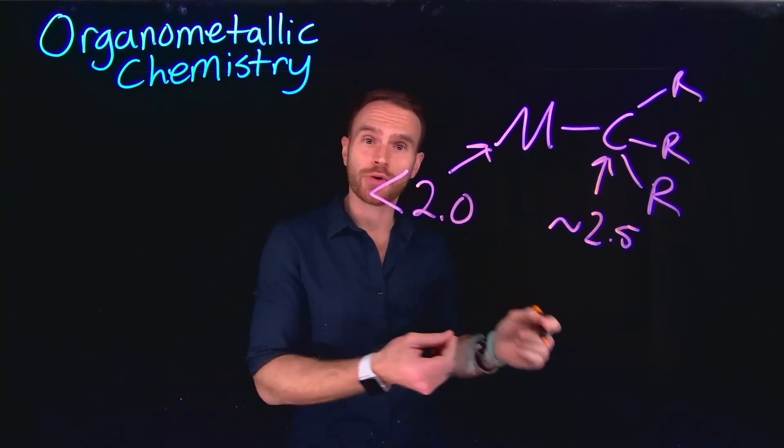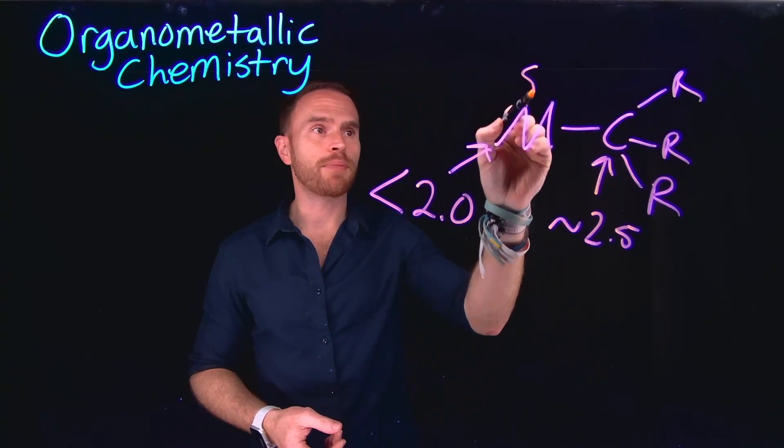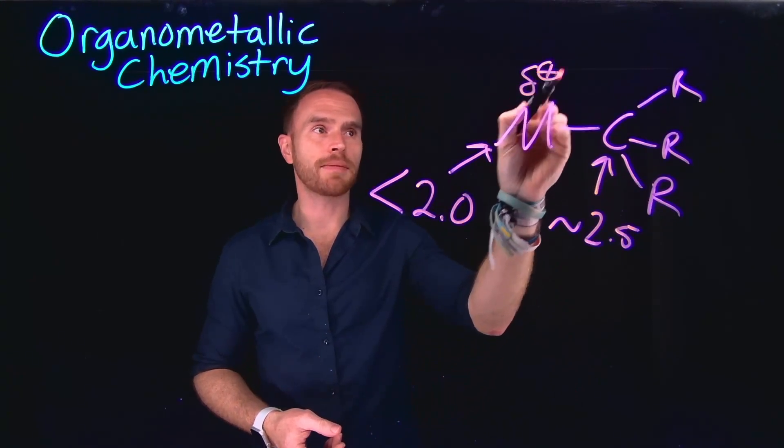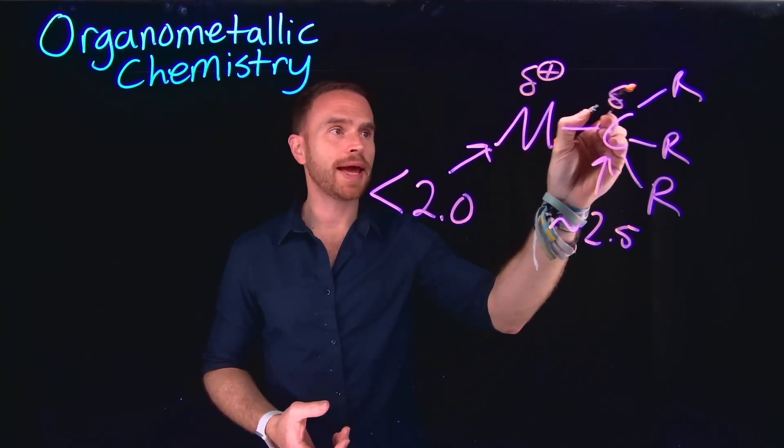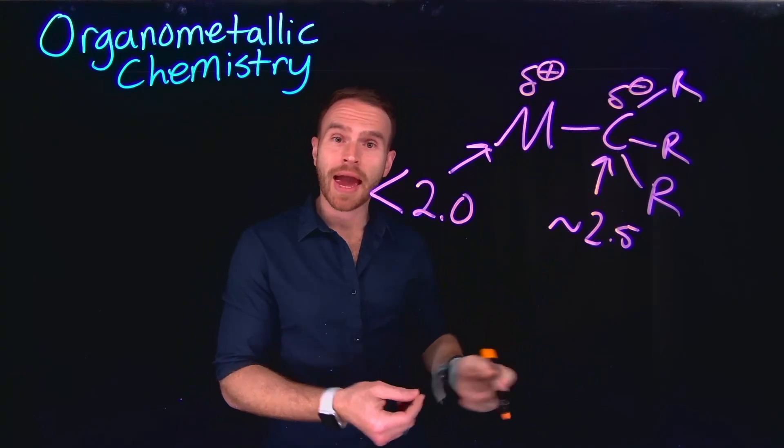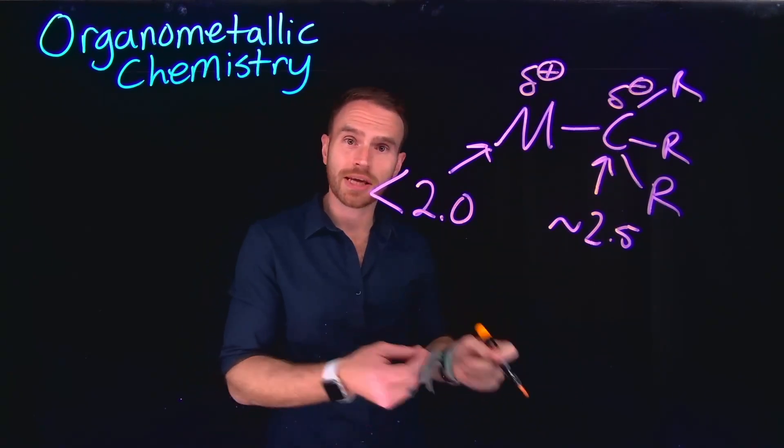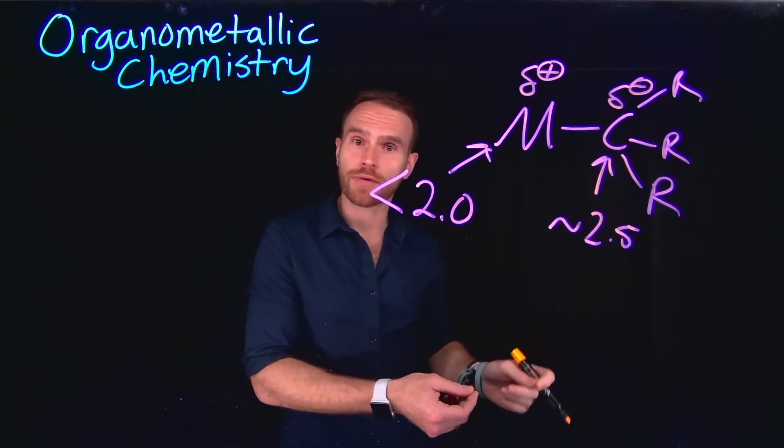And what this does is create a unique dipole where you have a partially positive end at the metal and a partially negative end on the carbon. This is different than the way carbon typically behaves in organic chemistry where it acts as an electrophile, because now we have a metal to carbon bond which generates a carbon nucleophile.